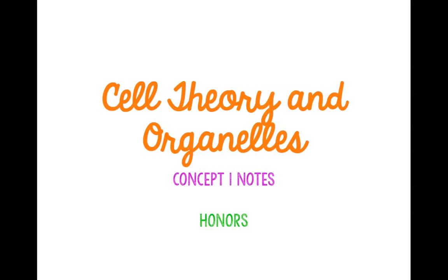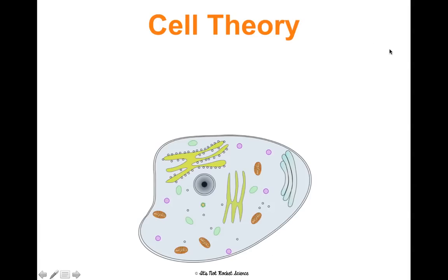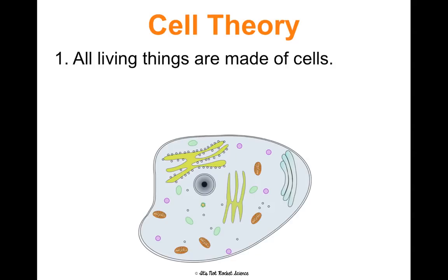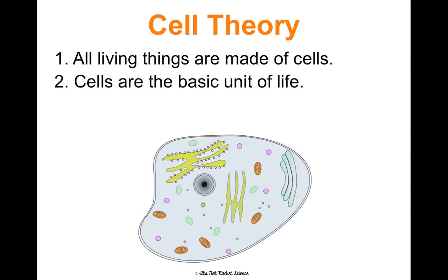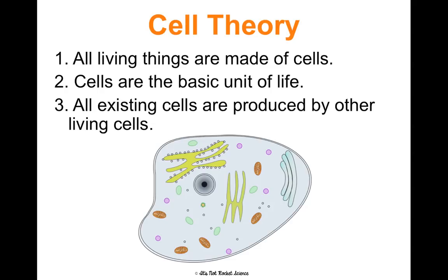We're going to go through concept one of our cells unit for honor students on cell theory and organelles. The cell theory is basically basic principles that we understand to be true about cells, and they're going to guide what we talk through over the rest of the unit. First, all living things are made of cells. Second, cells are the most basic unit of life. And third, all existing cells are produced by other living cells.